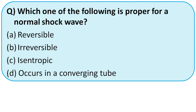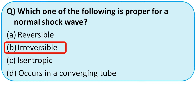Which of the following is correct for a normal shock wave — reversible, irreversible, isentropic, or occurs in a converging tube? Normal shock waves and oblique shock waves are both irreversible processes. So the right option is option B.